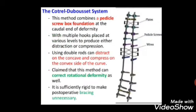The third option is the Cotrel-Dubousset system, which combines a pedicle screw-rod foundation at the caudal end of the deformity with multiple hooks at various levels to produce either distraction or compression. Using double rods, it can distract on the concave and compress on the convex side, correcting rotational deformity as well. It is sufficiently rigid to make postoperative bracing unnecessary.